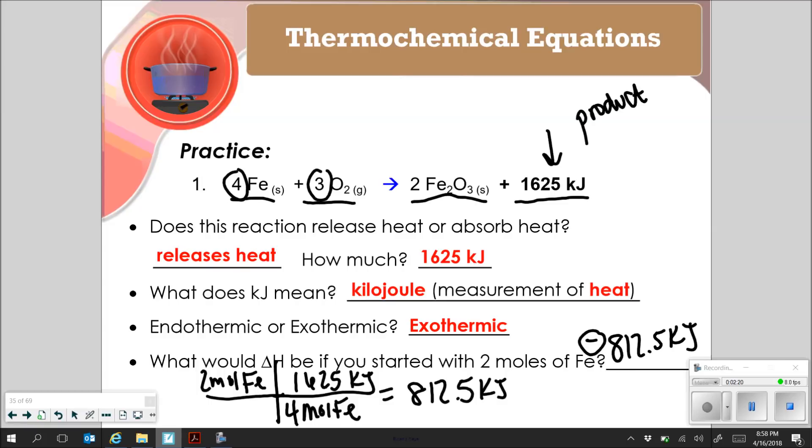Note that when I take that value out of the equation, it has to show whether it's positive or negative, because that tells me if that change in enthalpy is exothermic or endothermic, or if heat is being released or absorbed. And in this case, it is being released. So when I take that number out, it's a negative 812.5.